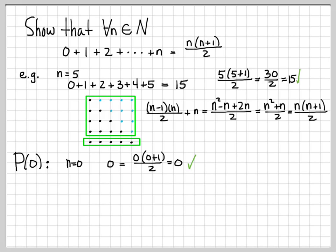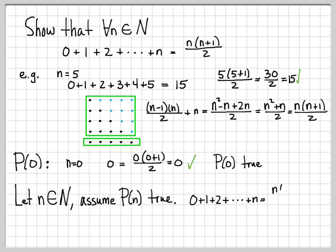The next thing we do when we do induction is we assume that P of n is true for all n in N. So we're going to let n in N, and we're going to assume that P of n is true. What does it mean to assume that P of n is true? It means that we're going to assume that this is a true statement: that 0 plus 1 plus 2 plus dot dot dot plus n is equal to n times n plus 1 quantity over 2.